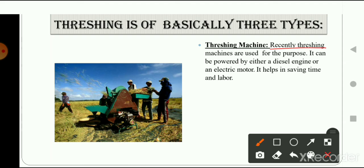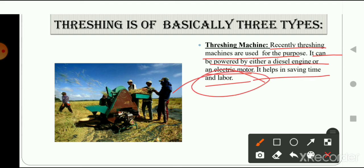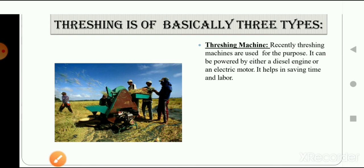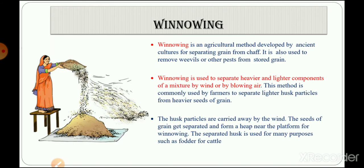The third way is threshing by machines. Recently, threshing machines are used for this purpose. They can be powered by either a diesel engine or an electrical motor, helping save time and labor. The harvested stock is put into the machine, the husk gets separated, and the seeds come out through a funnel attached on the other side of the machine. In today's time, threshing is most commonly done with the help of machines.